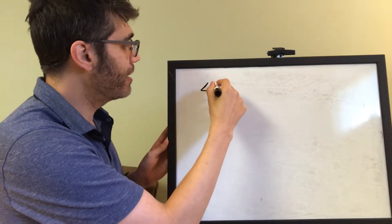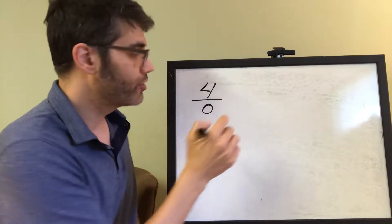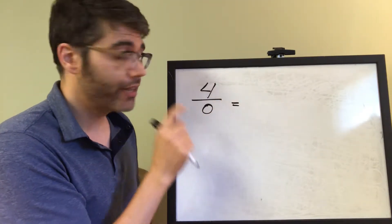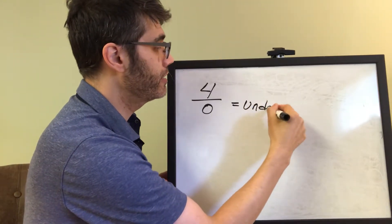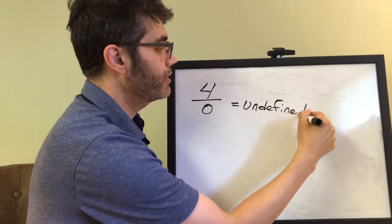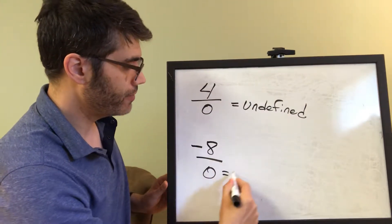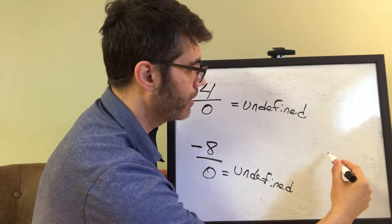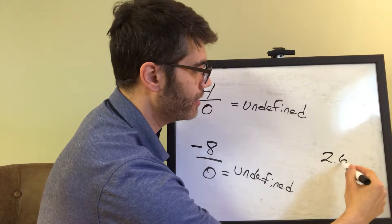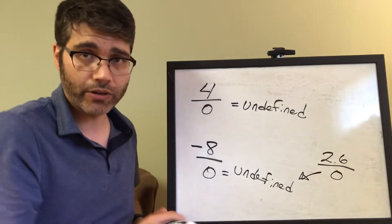Now for the third weird fraction, that's if you have 0 in the denominator. So whenever you have 0 in the denominator, the fraction is going to be undefined. And it doesn't matter what's in the numerator. So it could be negative 8, it's still going to be undefined. It could be 2.6 in the numerator. If the denominator has 0, it's still undefined.